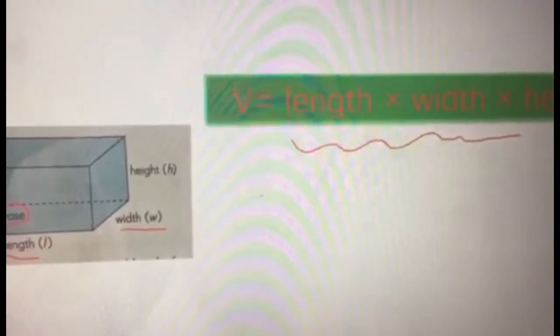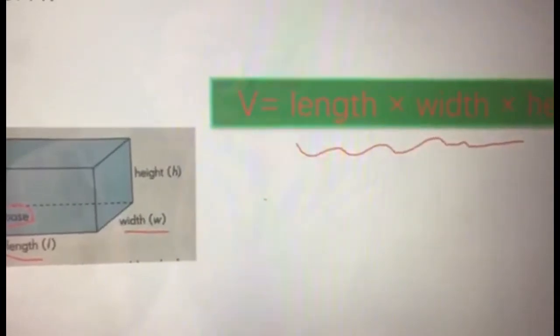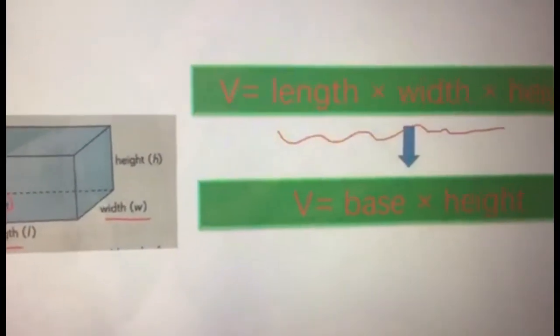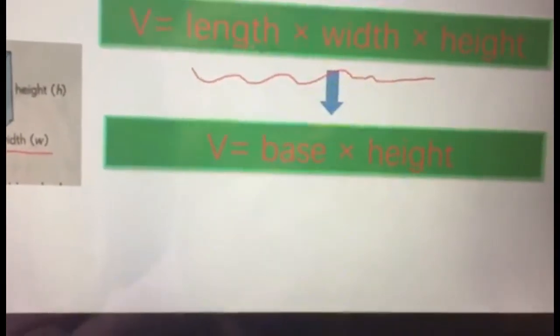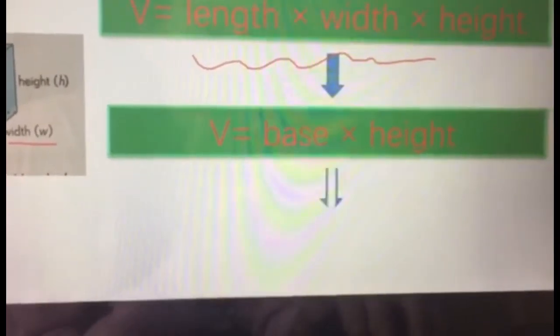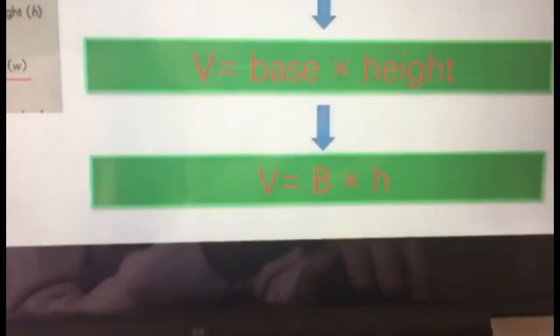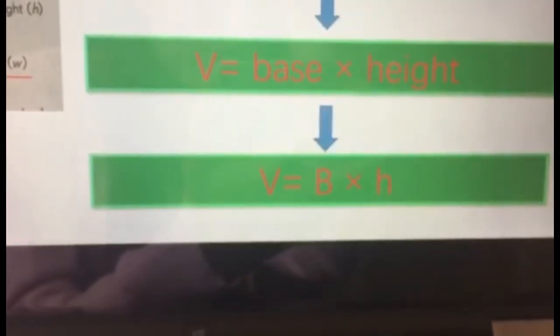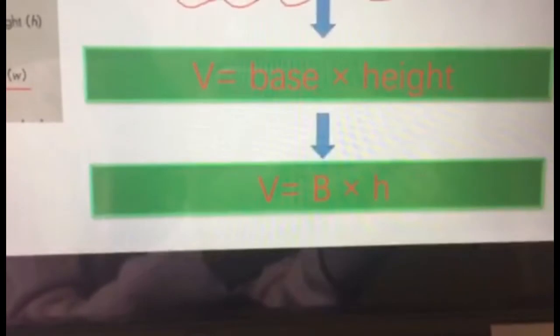So if you are given the area of the base, you can write the formula into volume equals base times height. In letters you can write it b times h, so V equals b times h.